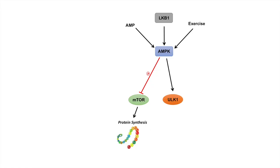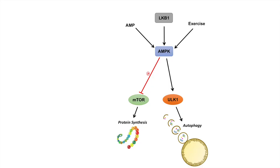Another thing AMPK does is it activates ULK1. ULK1 is an indispensable protein involved in macro-autophagy. So AMPK activates ULK1, which will then activate autophagy — meaning AMPK signaling leads to an activation of the autophagy pathway.